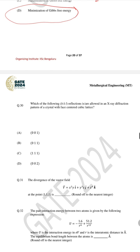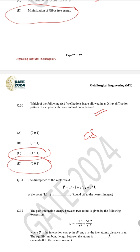For question number 30, again MSQ, which reflections are allowed in the XRD pattern of a crystal with FCC lattice — as discussed in the last video, (111) and (002) are allowed, so the correct answers are C and E.